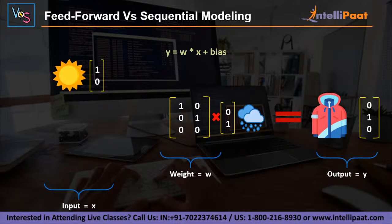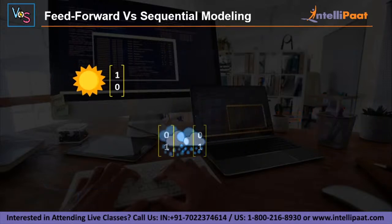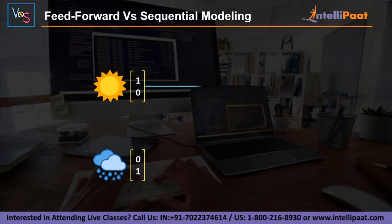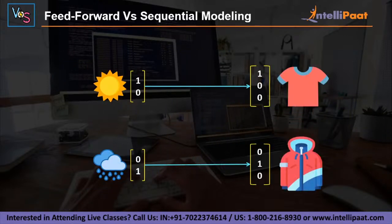One thing to observe is that the bias value for this whole model is 0. This is because the data is quite small and there is no huge processing going behind the model. Basically, the model is mapping sunny weather to t-shirt and rainy weather to jacket. Now, let's move to the next example involving sequential data.